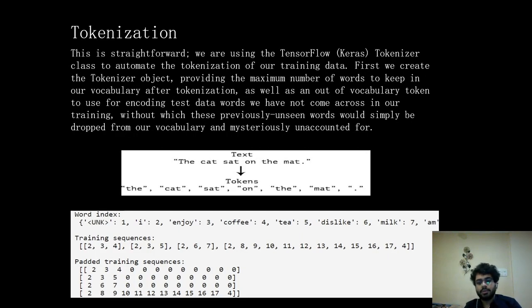Tokenization is pretty straightforward. To automate the process of tokenization, we use the Keras tokenization object. First we create the tokenization object and provide it with the maximum number of words that we want to keep in our vocabulary. We also provide it with unseen words which we haven't seen in our dictionary or training part yet. For example, 'the cat sat on the mat' is split into different words and each word is assigned a number. The tokenization will not exceed the number of words that we have provided.